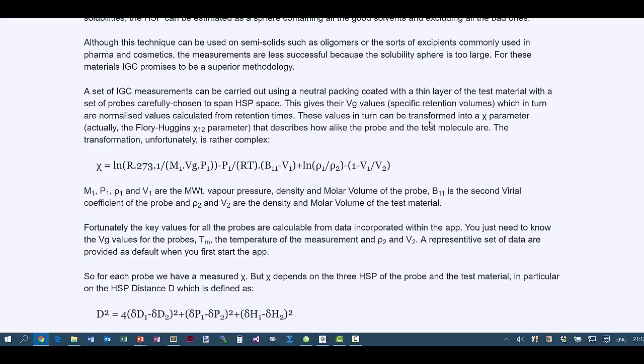So, what we do is measure the VG, the specific retention volume, that's been discussed in the previous videos. So, that comes directly from the retention time. And then, via this rather complicated equation, we can calculate the thermodynamics of the interaction, the Flory-Huggins chi parameter. The inputs are the mass, the vapor pressure, the density, and the molar volume of the probe molecule, plus B11, which is the second virial coefficient.